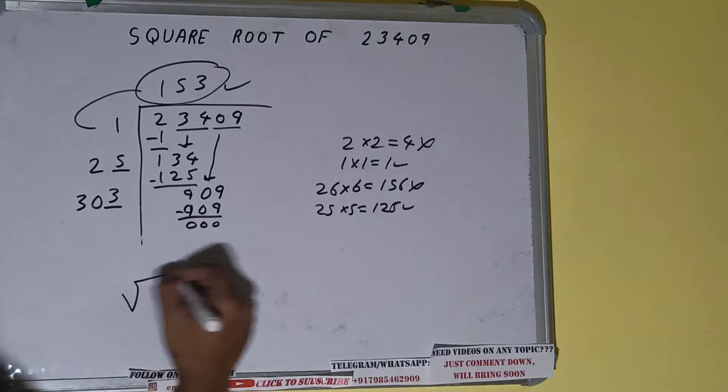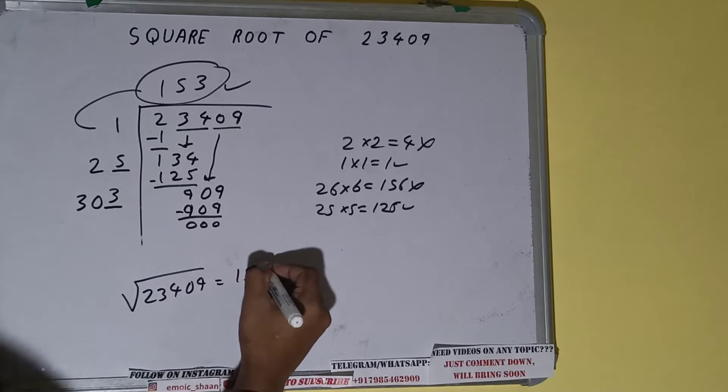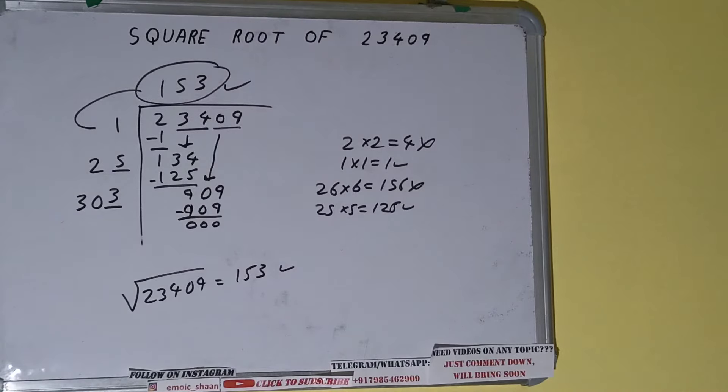So square root of 23409 will be 153. If you found the video helpful, please do the like button, do consider subscribing, and thanks for watching.